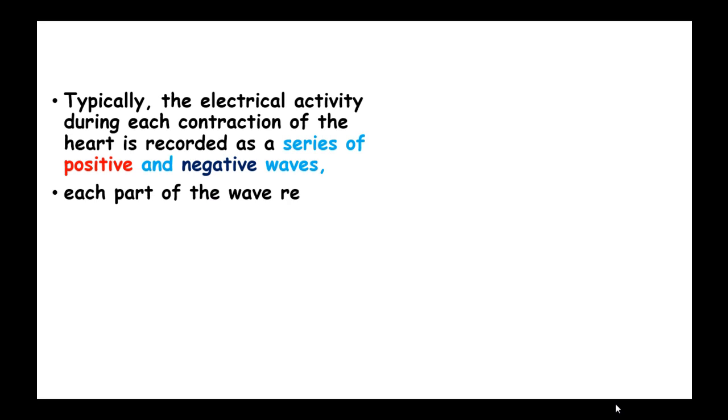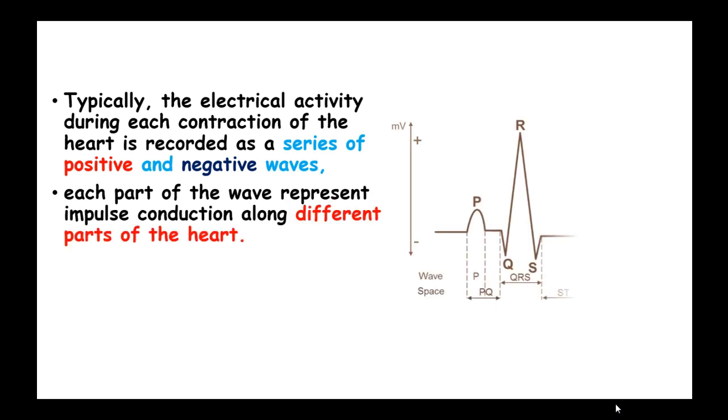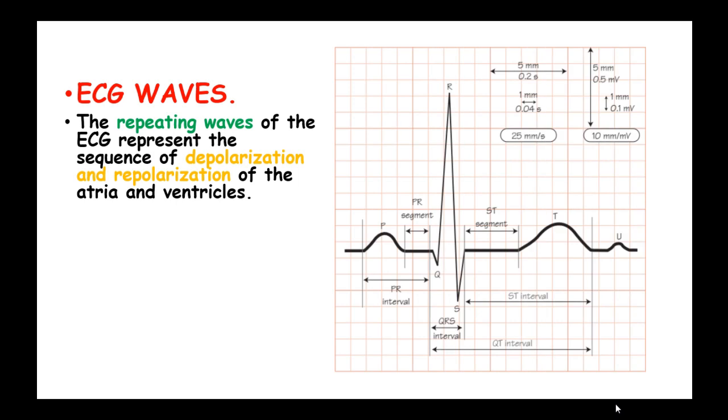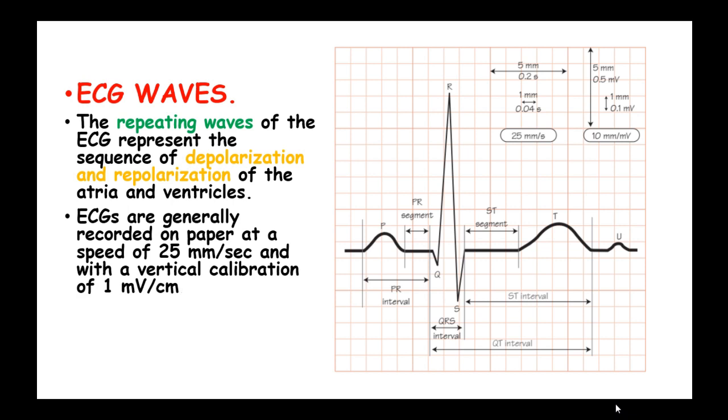Typically the electrical activity during each contraction of the heart is recorded as a series of positive and negative waves. Each part of the wave represents impulse conduction along different parts of the heart. The repeating waves of the electrocardiogram represent the sequence of depolarization and repolarization of the atria and the ventricles. ECGs are generally recorded on paper at a speed of 25 millimeters per second and with a vertical calibration of 1 millivolt per centimeter.